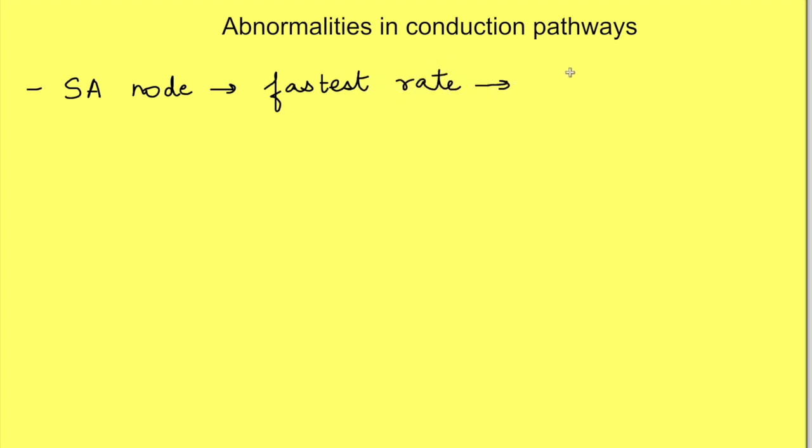That's why it is known as the pacemaker. Also in abnormal situations, even myocardium can generate electrical impulses. Secondly, remember that one spread of action potential means one heartbeat, one contraction. Now let's discuss some abnormalities.